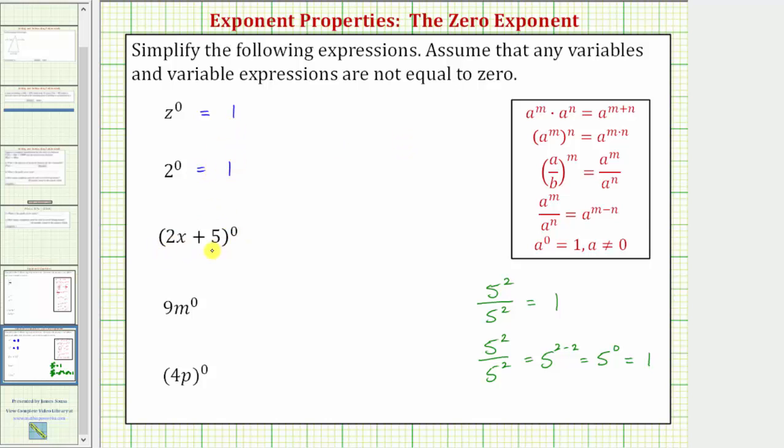Next we have the quantity two x plus five raised to the power of zero. Because the entire quantity is raised to the zero power, we know this equals one.